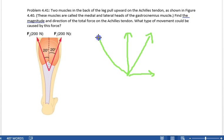If you look at the other side, the vertical component again is 200 newtons times the cosine of 20 degrees. And the horizontal component is again 200 newtons times the sine of 20 degrees, but it's in opposite direction.